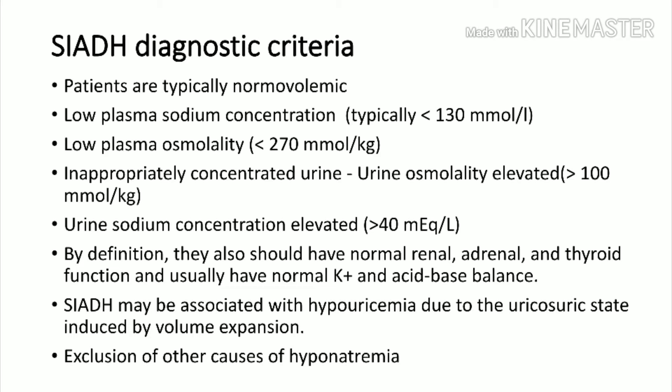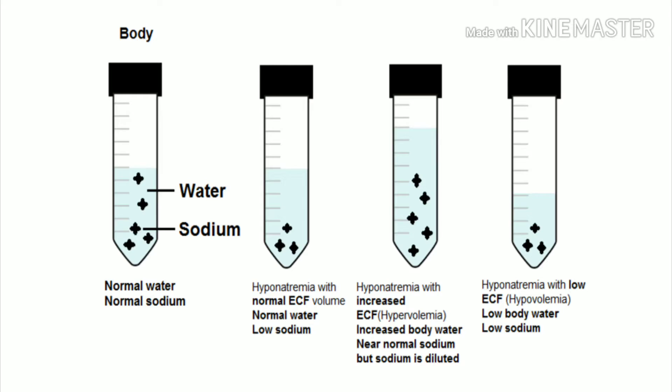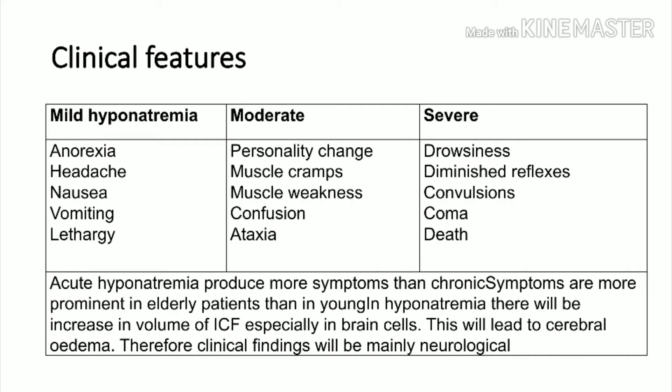SIADH is a diagnosis of exclusion — other causes of hyponatremia must be ruled out. To summarize the three types: dilutional hyponatremia with large body water excess, normal-volume hyponatremia as in SIADH, and decreased-volume hyponatremia from renal or extra-renal losses such as vomiting and diarrhea.